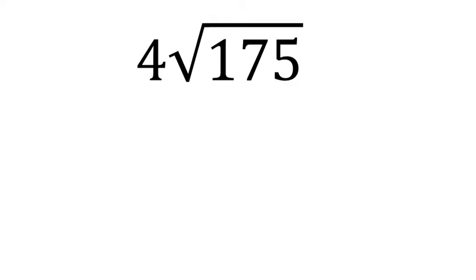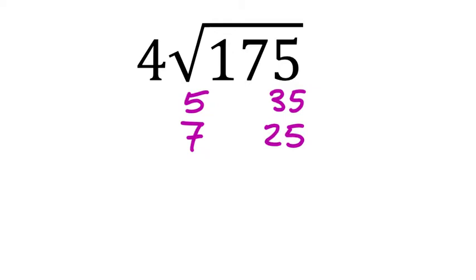175 and 1 — that doesn't work. We never want to use 1 by itself. I can see it's divisible by 5, so that would be 5 times 35. That doesn't really help us because neither of those are perfect squares. It's also divisible by 7, because 35 is. So that would be 7 times 25. And 25 is a perfect square.